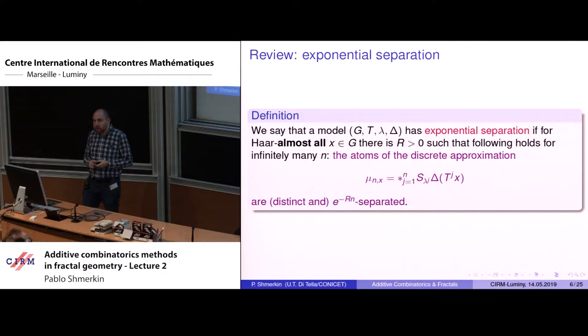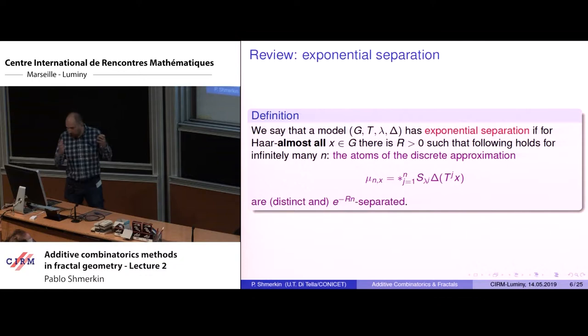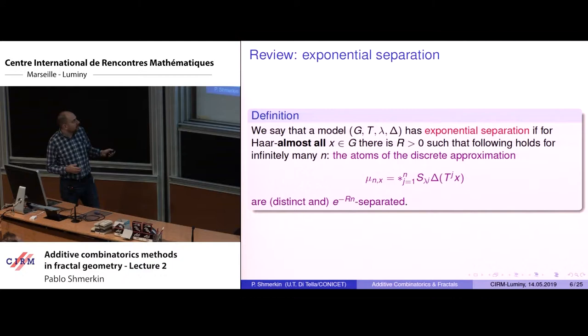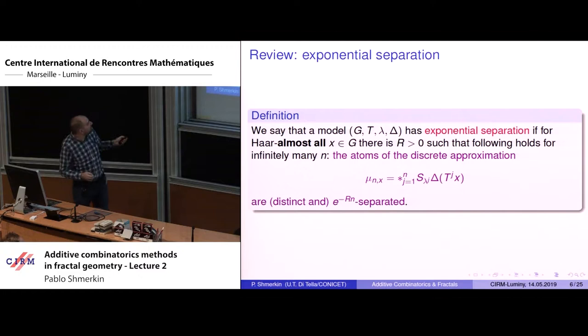Let me review the definition of exponential separation — a kind of Diophantine condition on this model. It says that atoms of the discrete approximations don't come too close together in an exponential sense. These are purely atomic measures with at most C^n atoms, and exponential separation means they can be much further apart compared to the average distance, but only by an exponential amount. There can be no exact coincidence either — all atoms have to be really distinct.